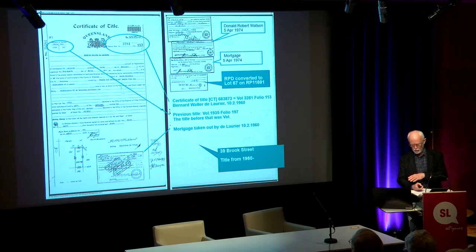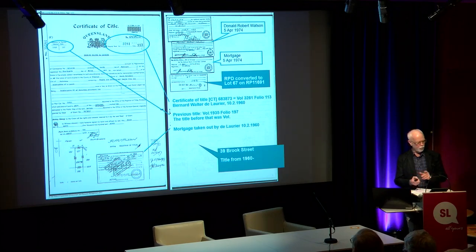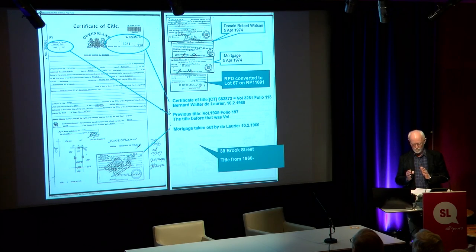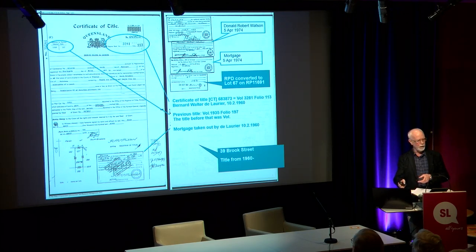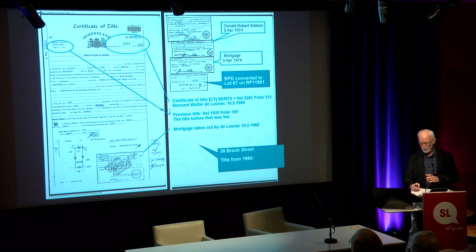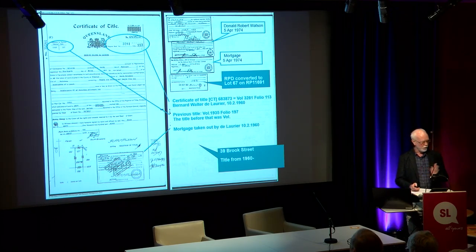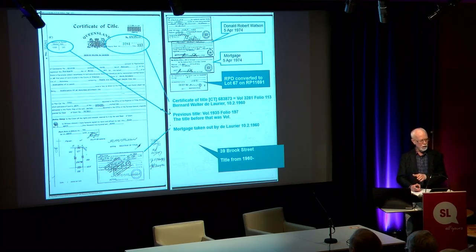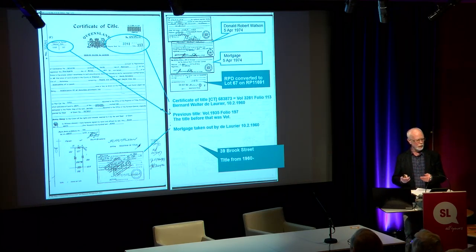When I settled on the property, I got a copy of the title — the same as the documents you've seen. I could see what's been observed: it told a story of the land ownership from 1960. This is the current title, converted to real property — Lot 67 on RP 11691 — which happened in 1986, as Kay has described. But I could also see it had the previous titles that preceded, so if you amalgamated those together, you got that sequence that Kay has talked about.